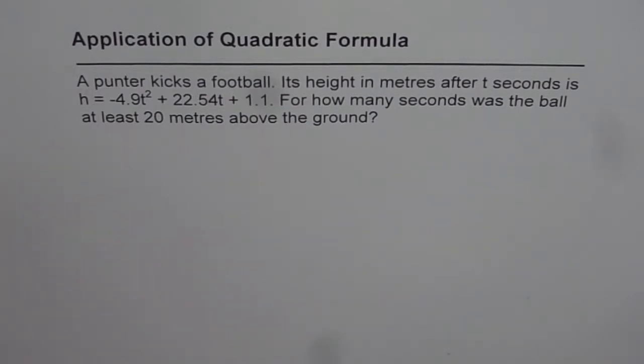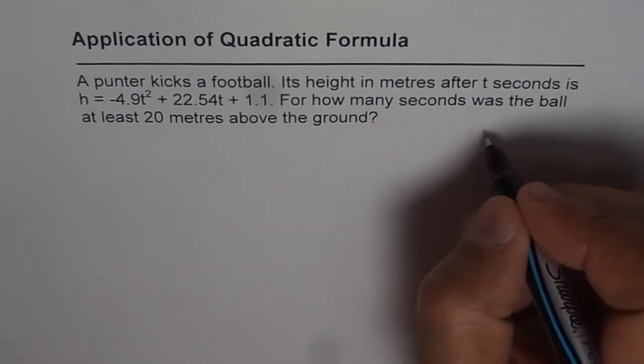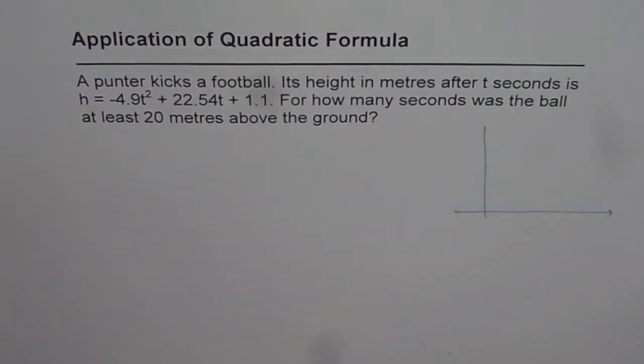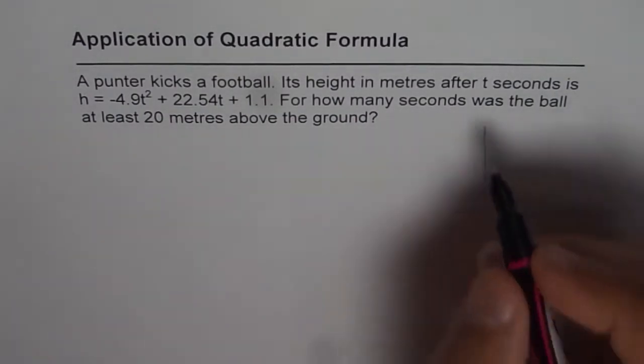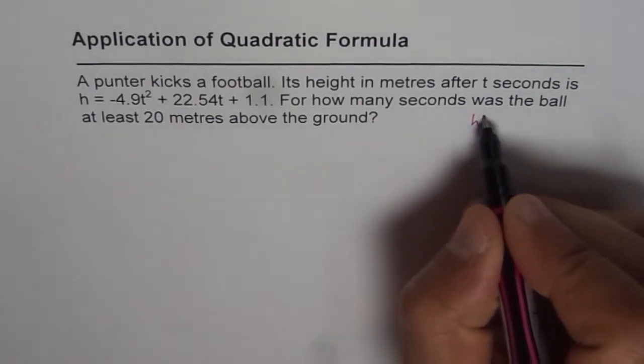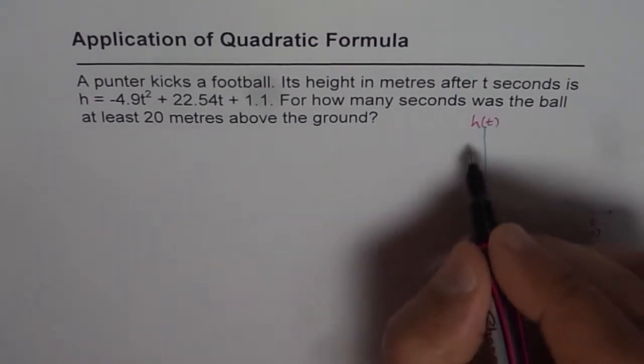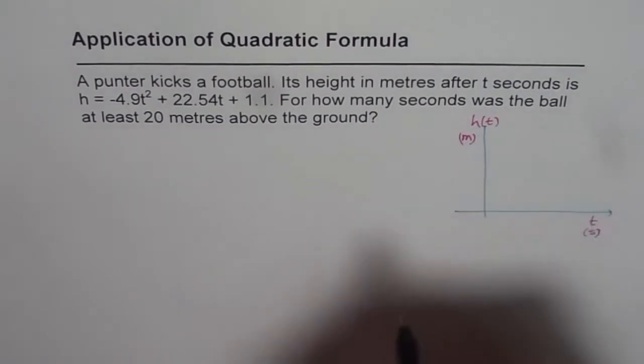Now, let us first sketch and represent the situation. So what we have here is, let us say the vertical axis represents the height of the ball at an instance of time t, the horizontal axis represents time. Time is given to us in seconds, height is given to us in meters.